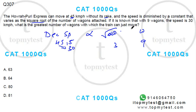What is the greatest number of wagons which means the train can just move? Now, if I want the train not to move, the minimum requirement will be to bring it to reduce all this 45.